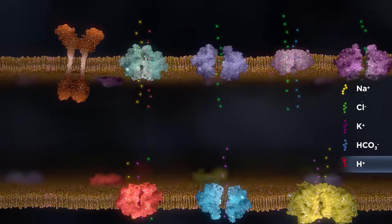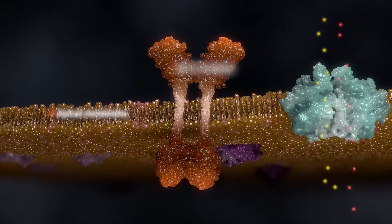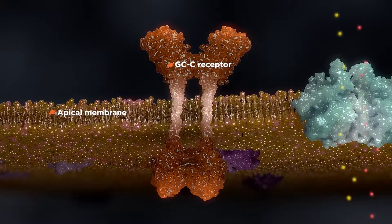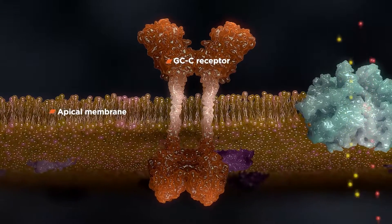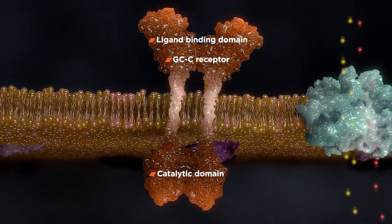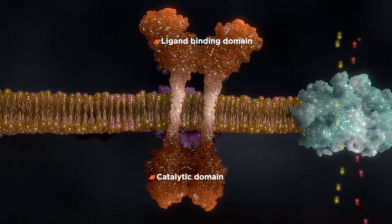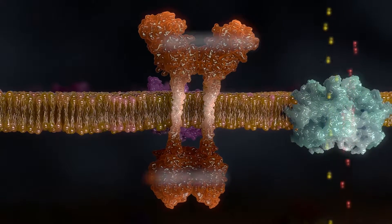One important regulator of water secretion and ionic balance is the guanylate cyclase C receptor, also known as the GCC receptor. GCC receptors are located throughout the GI tract and genetic alterations of the receptor have been shown to be associated with constipation or diarrhea.